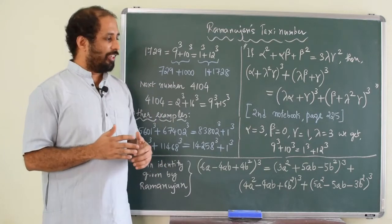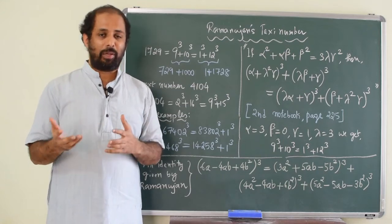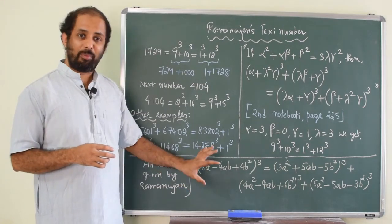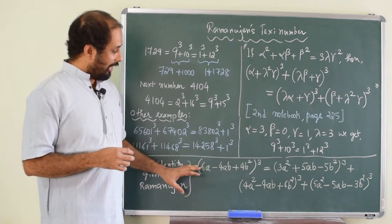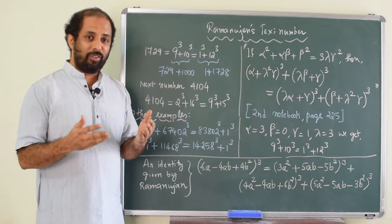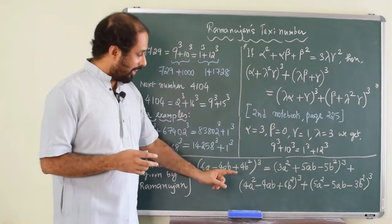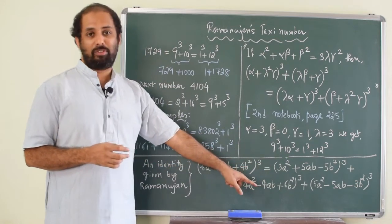And when he was in India, he used to regularly contribute to a mathematical journal called GIMS, Journal of Indian Mathematics. Now, this is one question Ramanujan had asked in GIMS. And here, we have an identity in A and B. And if you substitute different values for A and B, you will get different equations. And on the right hand side, you have sum of 3 cubes.